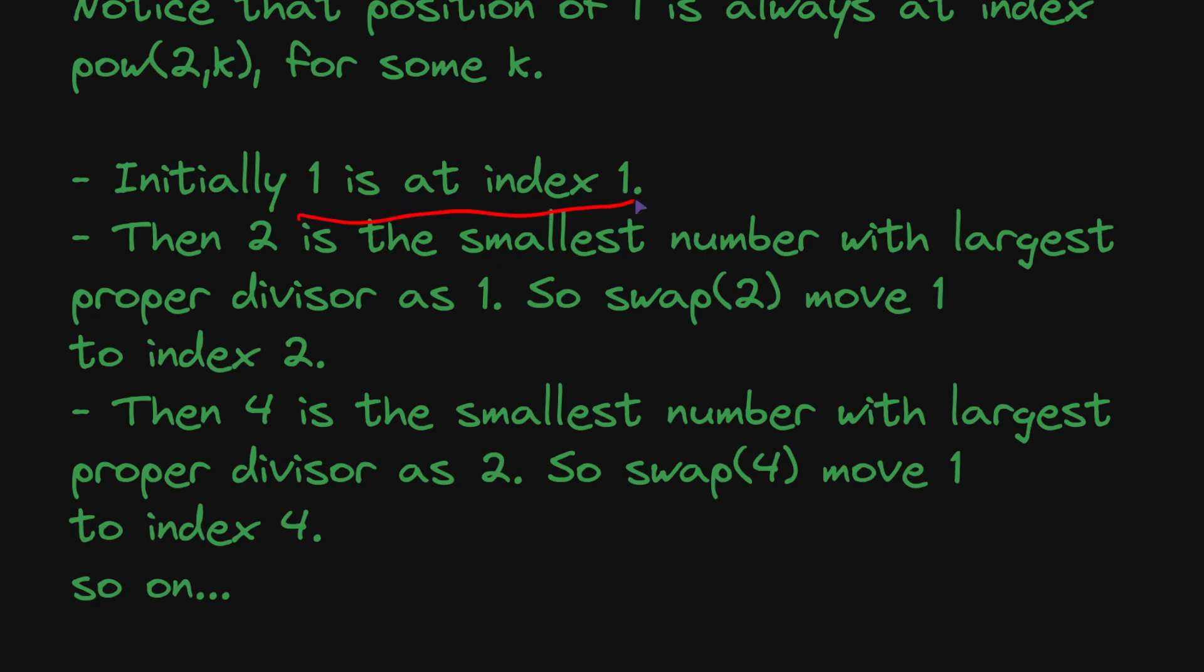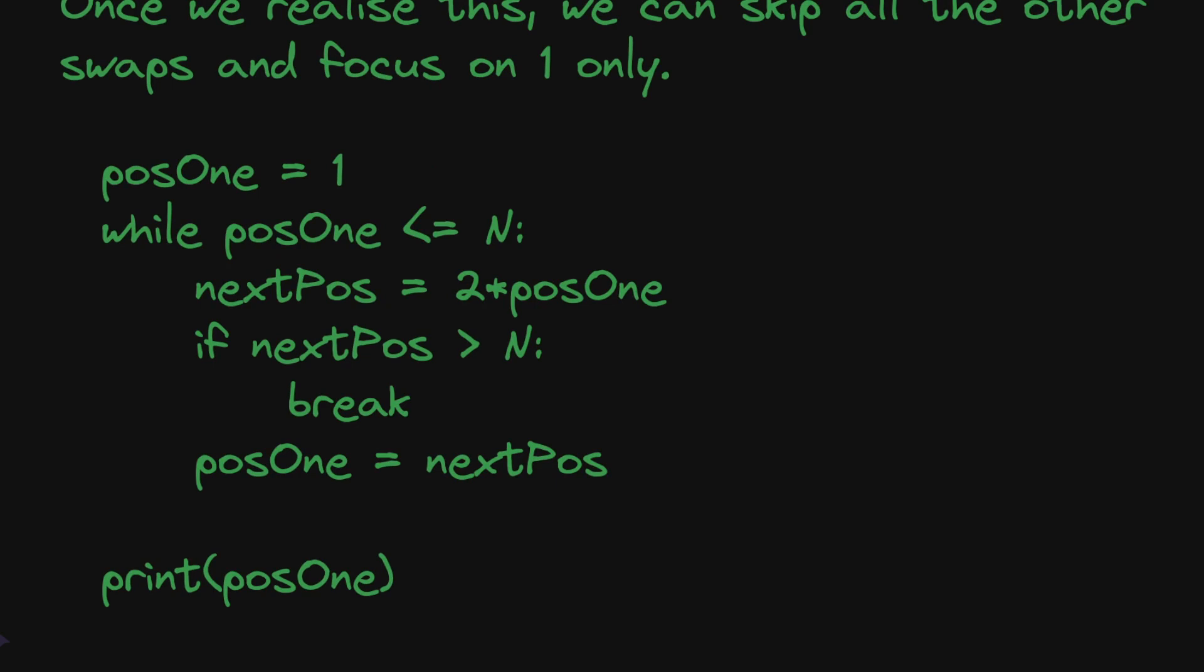Initially 1 is at index 1. Then 2 is the smallest number with the largest proper divisor as 1, so swap 2 moves 1 from index 1 to index 2. Then 4 is the smallest number with the largest proper divisor as 2, so swap 4 moves 1 to index 4, and so on. The story repeats. Once we realize this we can skip all the other swaps and focus only on 1.